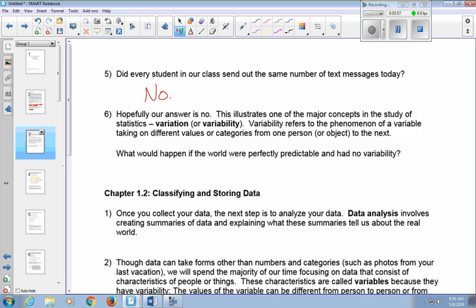This illustrates one of the major concepts in the study of statistics, and that's variation or variability. Variability refers to the phenomenon of a variable taking on different values or categories from one person or object to the next. What would happen if the world were perfectly predictable and had no variability? Well, for one thing, we wouldn't need statistics. We would have no uncertainty. We wouldn't need it at all.